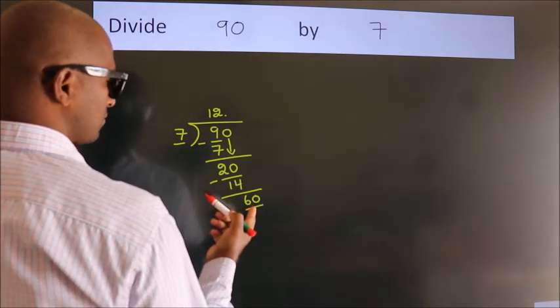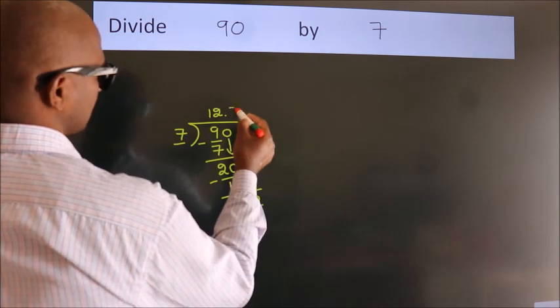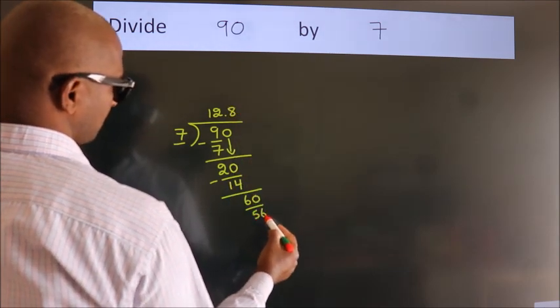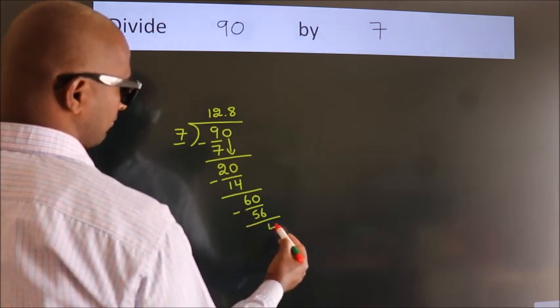A number close to 60 in the 7 table is 7 eights—56. Now we subtract. We get 4.